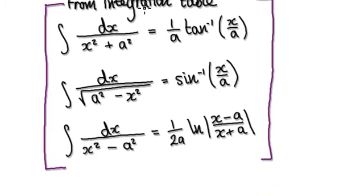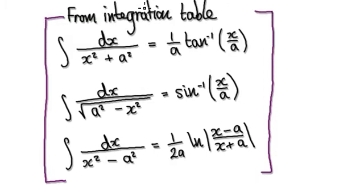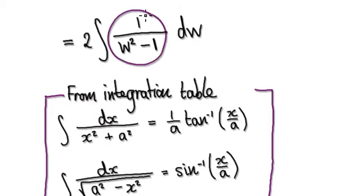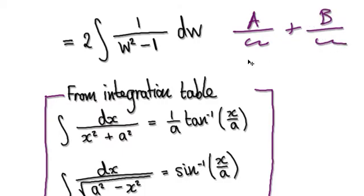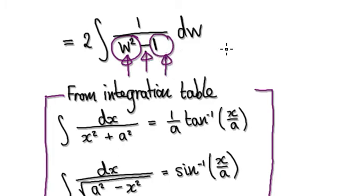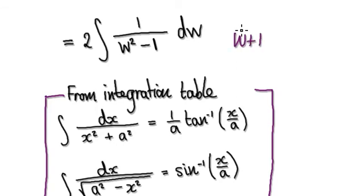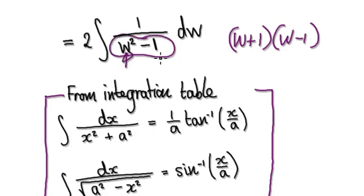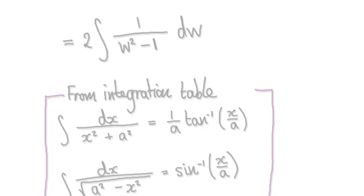So we are trying to rewrite this as something over one part plus B over another part. When looking at this, you should always keep an eye out for something being easily square-rootable, and if there happens to be a minus in between, then you can jump to w plus one and w minus one. Keep an eye out for something easily square-rootable with a minus in between, and you can jump to this. I will continue in the next video.